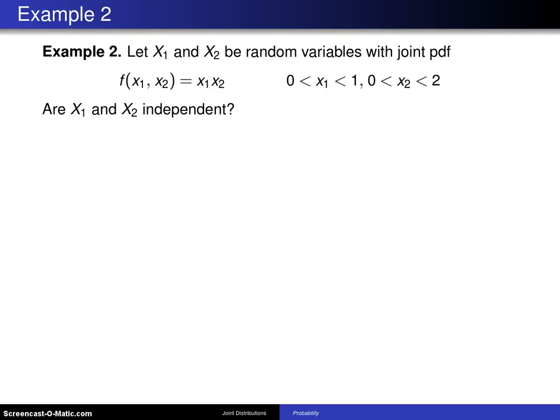The previous example considered discrete random variables x and y. This example considers continuous random variables x1 and x2. So here's the problem.